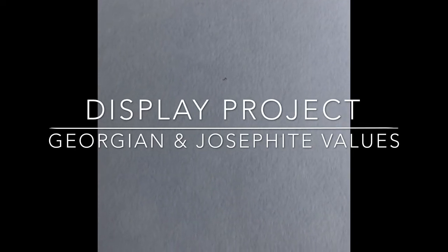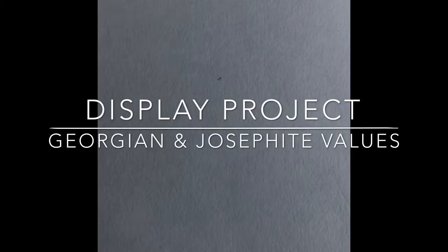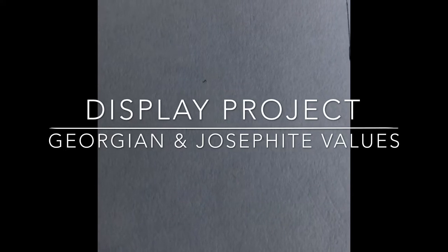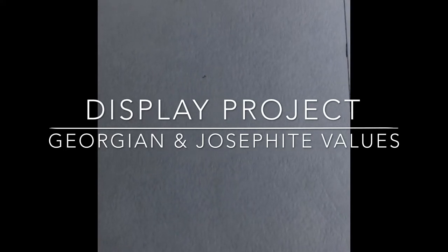We're gonna do something similar today but we're gonna turn them into colored letters. So I have planned out a range of keywords to do with Georgian and Josephite values that we're going to add on top of our backgrounds, but I need your help to do two letters each.